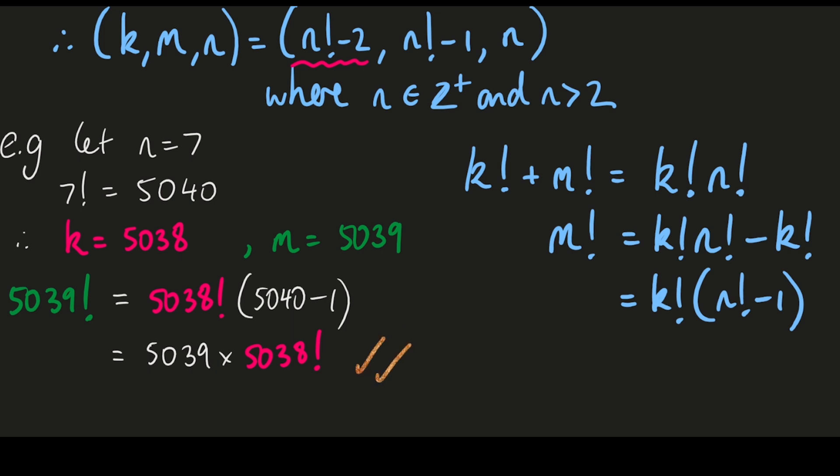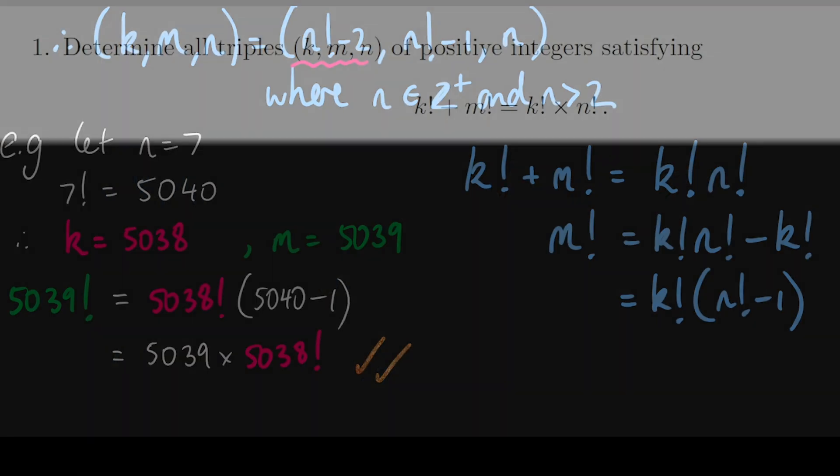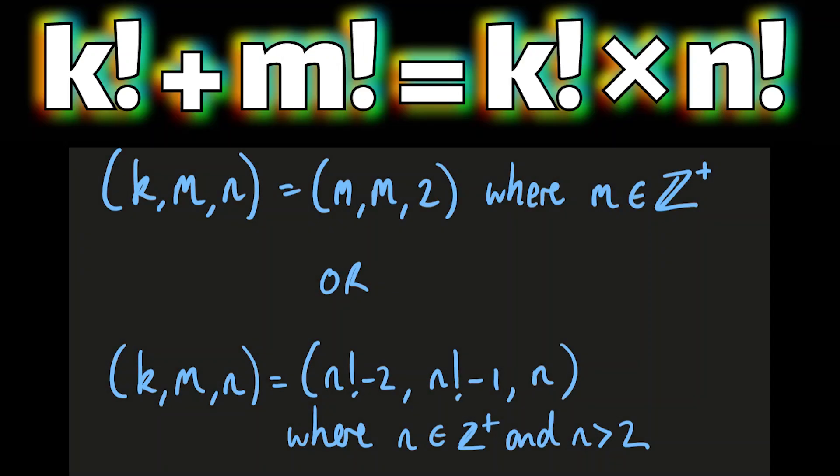So for n greater than 2, all solutions must have that form. If n equals 2, we get the first solution where k and m were both equal.